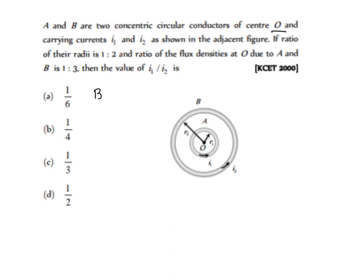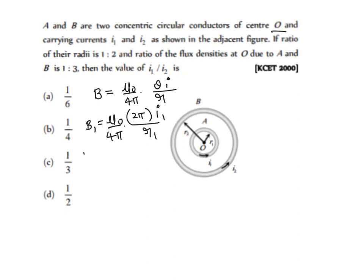The magnetic field at the center of a circular coil is given by B = (μ₀/4π) × (θI/R). Since we have two concentric circular coils, B1 = (μ₀/4π) × (2π × I1/R1) and B2 = (μ₀/4π) × (2π × I2/R2), where θ equals 2π for a full circle.